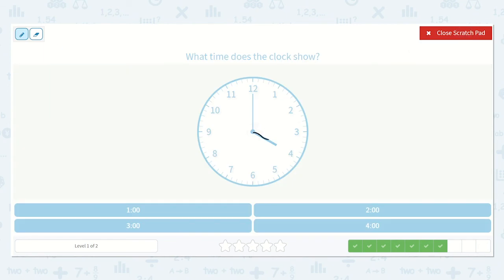Next, we have the hour hand pointing at the 4. Remember, the hour hand is the shorter hand. And we have the long hand pointing at the 12. So I know my short hand will always go first. So 4 is the hour. And 0, 0, or o'clock, is the minute. So 4 o'clock. Here it is.